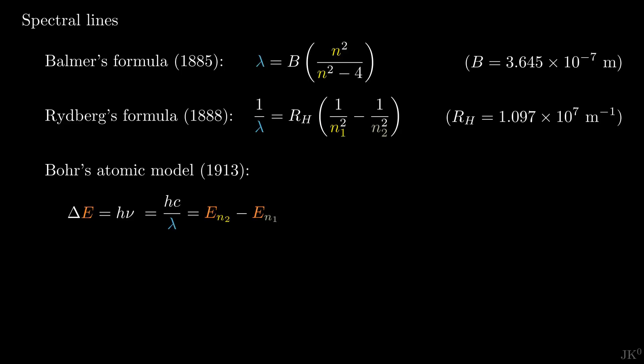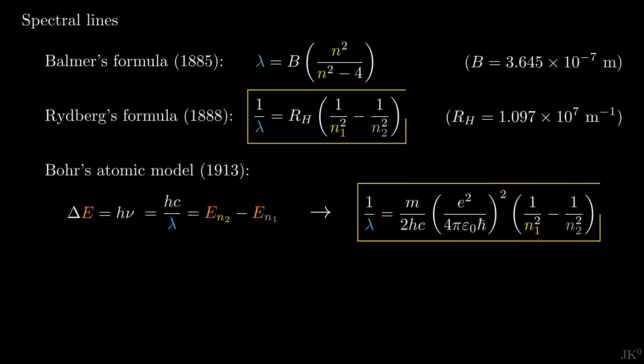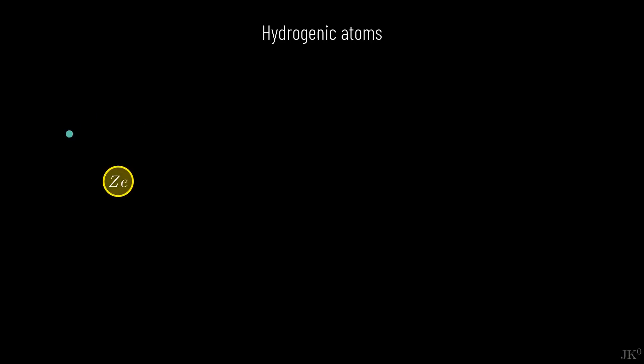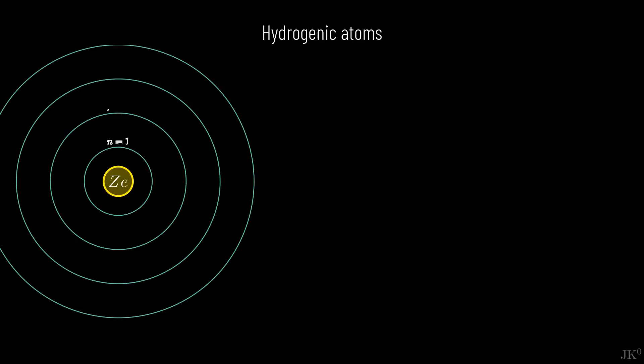In the previous video I showed you the derivation of the energy levels for hydrogen. Repeating the same steps for any hydrogenic atom in which the nucleus has an electric charge z times e, Bohr's formula for the frequency of the spectral lines becomes this. The only extra term is the factor z squared. This is the form presented by Bohr already in the first part of the trilogy.